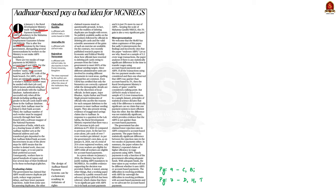To use ABPS, workers must authenticate their job card details with the Aadhaar database, and Aadhaar must also be linked to the worker's bank account. If any of these steps is incorrect, workers may be denied their work or face wage delays. Fixing ABPS glitches requires workers to spend money and lose several days of their livelihood. The article explores the challenges in implementing this move by the central government.